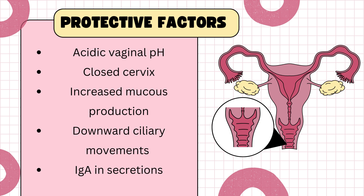The ciliary movement of the female genitourinary tract is directed downwards, so they would prevent organisms from ascending upwards. Whenever these protective factors are disrupted, it can lead to infections. So what are the risk factors for genitourinary tract infections?